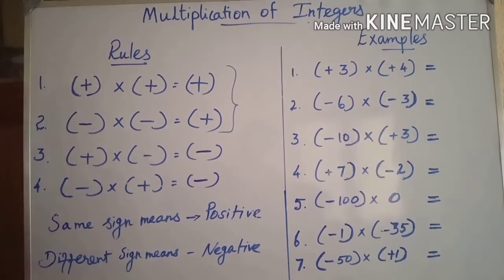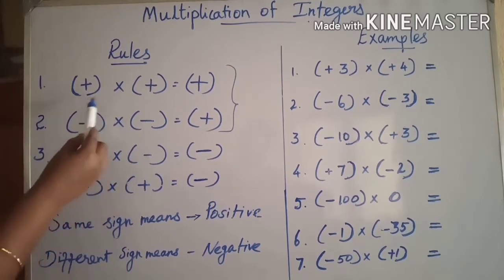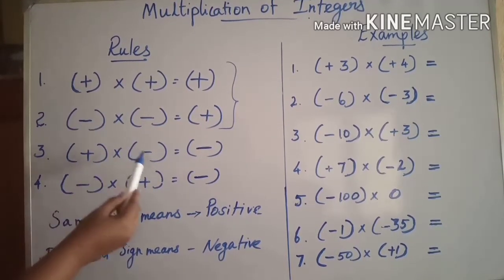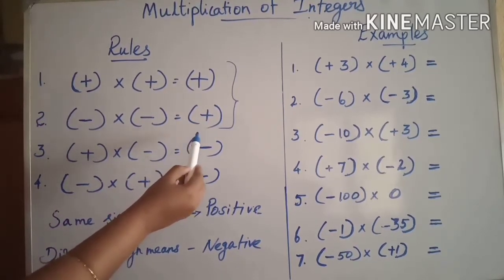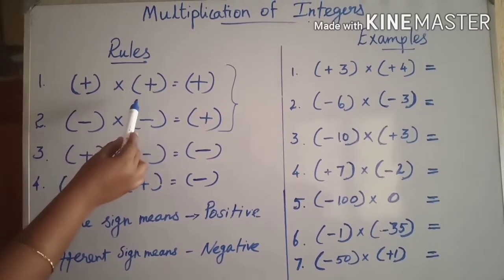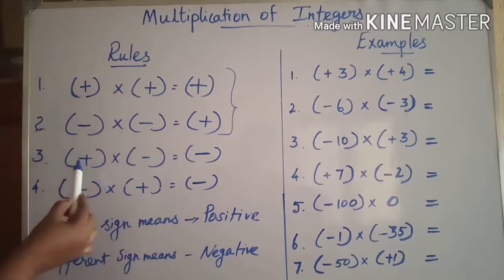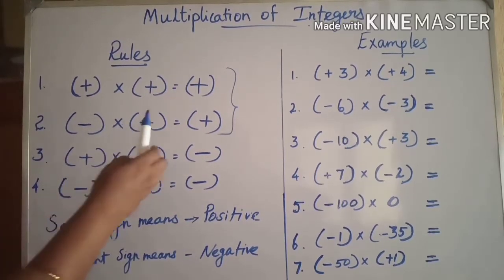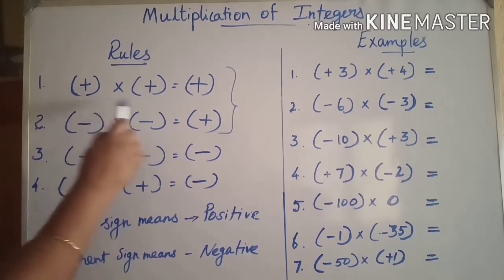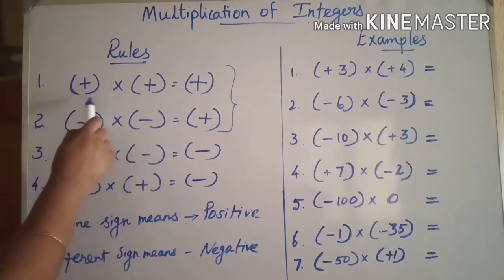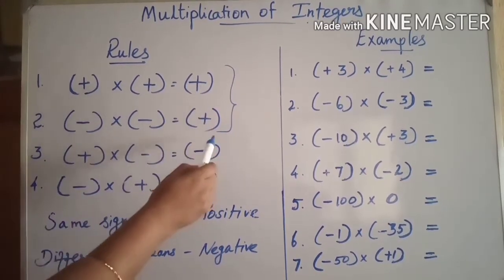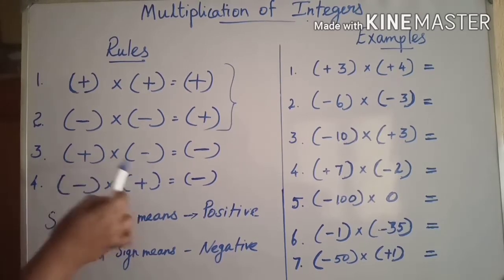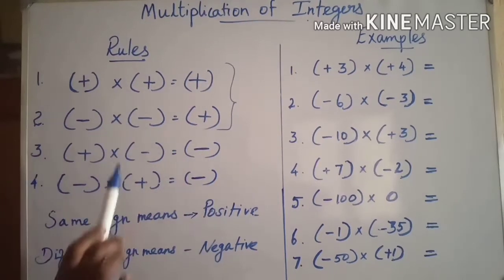For multiplication of integers, we have four rules. The product of two positive integers or the product of two negative integers is positive. The product of one positive and one negative, or one negative and one positive, is negative. When you multiply two integers with the same sign, whether it may be positive or negative, the answer is always positive. When you multiply two integers with different signs, the result is always negative.